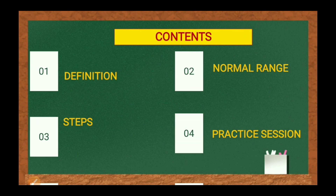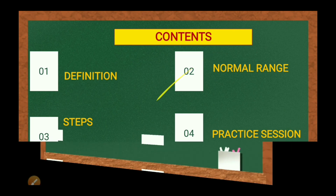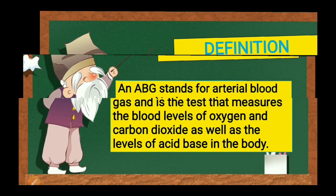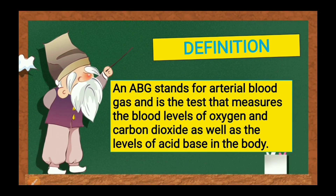ABG interpretation — the main contents are: definition, normal range, steps, and practice session. An ABG stands for arterial blood gas and is a test that measures the blood levels of oxygen and carbon dioxide, as well as the levels of acid-base in the body. Simply put, the ABG is a test to determine the oxygen and carbon dioxide levels along with acid-base balance in the body.